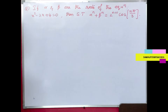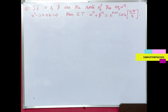Look at this question. If alpha and beta are the roots of the equation x² - 2x + 4 = 0, then show that α^n + β^n = 2^(n+1) · cos(nπ/3).